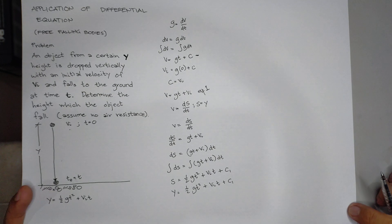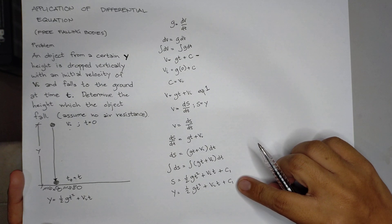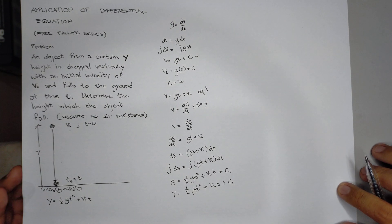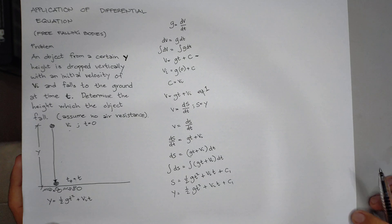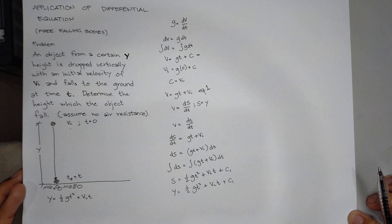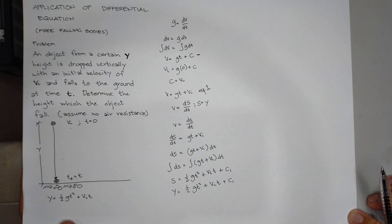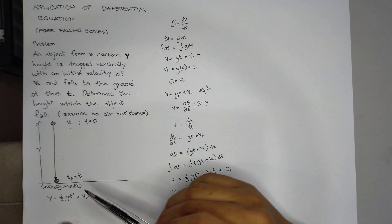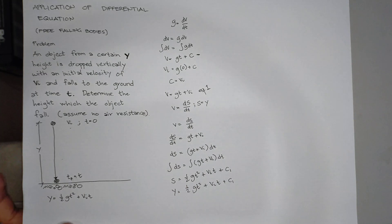Again, we will determine the arbitrary constant c1 from our figure. So before time starts to count, the object is not yet fallen, which means our y or the distance height is not yet determined, which is the height is 0.